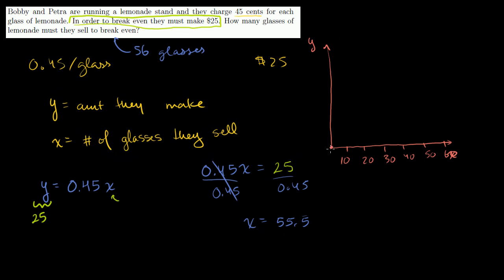And when they sell 0 glasses, they make $0. That's their y-intercept. It's at y is equal to 0. Then when they sell 10 glasses, they make $4.50. So this is $4.50. This is $9. Actually, let me just do it like this. Let me just mark only the multiples of 9. So let's say 9, 18, 27, 35.